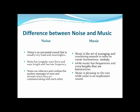This slide shows the difference between noise and music. Noise is an unwanted sound that is usually very loud and meaningless. Music is the art of arranging and combining sounds in order to create a harmonious melody. Noise has an irregular waveform and wavelength and has low frequency, while music has frequencies and wavelengths that are harmonious. Noise can obstruct communication, while music is pleasing to the ears.